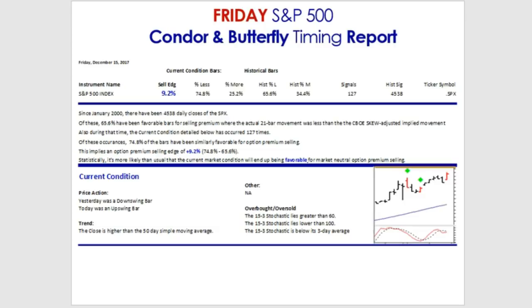During that same time, from January of 2000 to the present, our current market condition has occurred 127 times. Of those 127, 74.8% have been favorable for selling premium through those delta-neutral strategies. Now, 74.8% is higher than two-thirds, so this implies an edge of roughly 9.2% — pretty good.